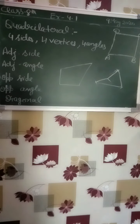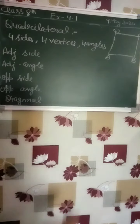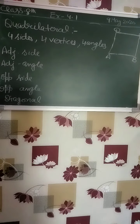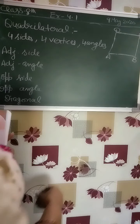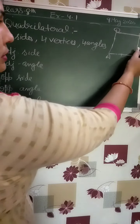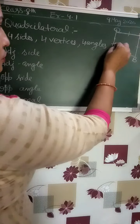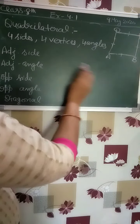That is also a quadrilateral, students. Now, in the quadrilateral there are 4 sides, 4 vertices, and 4 angles.